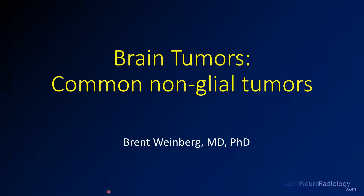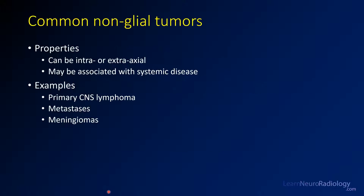Hi everyone. For this video we're going to talk about some of the common non-glial brain tumors. We'll just cover a few of the most common ones. Commonly you can have non-glial tumors. They can be intra-axial, meaning in the brain parenchyma, or extra-axial, as in outside of the brain parenchyma. They can be associated with a systemic disease.